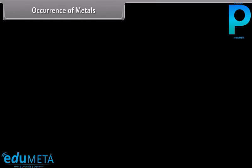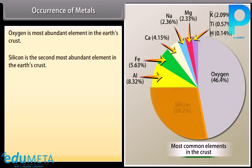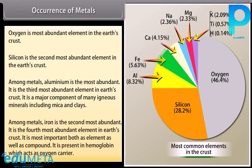Occurrence of metals: Oxygen is the most abundant element in the earth's crust, and silicon is the second most abundant. Among metals, aluminium is the most abundant — it is the third most abundant element overall, and a major component of igneous minerals including mica and clay. Many gemstones are impure forms of Al₂O₃. Among metals, iron is the second most abundant, being the fourth most abundant element in the earth's crust. It is present in haemoglobin, which acts as an oxygen carrier.